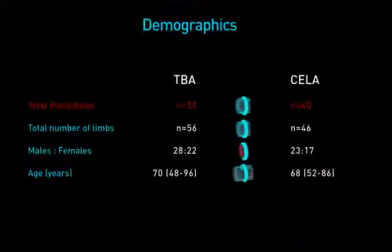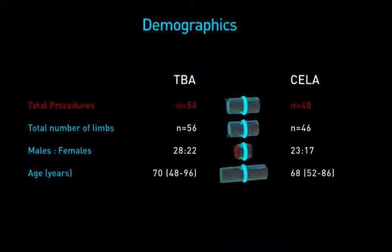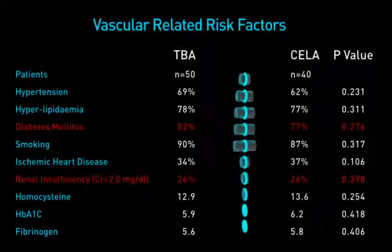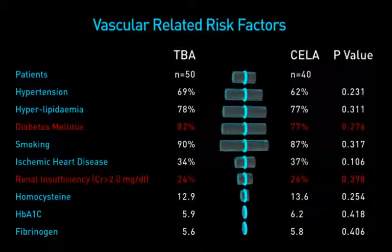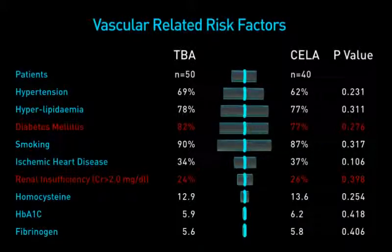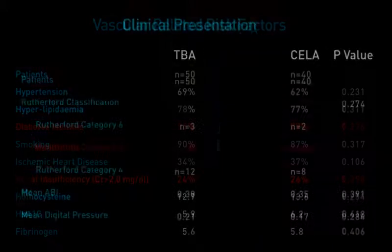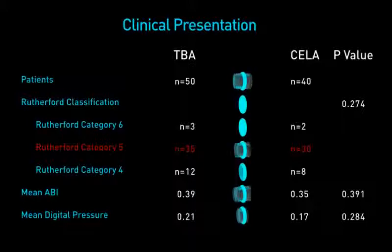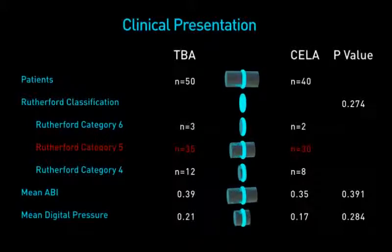We had more repeated procedures for tibial angioplasty than in the laser group. 80% of all our patients were diabetic and one quarter had chronic renal insufficiency. All patients had critical limb ischemia at Rutherford category 4, 5, or 6 with TASC-D lesions.